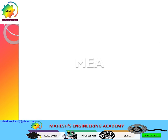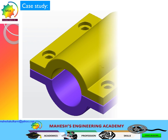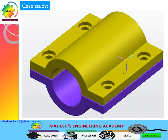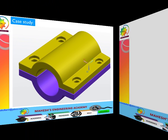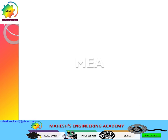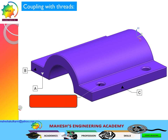Let us consider a case study to understand this more clearly. Consider an assembly of a coupling: the top part has a clearance hole with a counter bore, and the bottom part has a threaded hole. Let the bottom surface be datum A, the width be datum B, and the length be datum C.